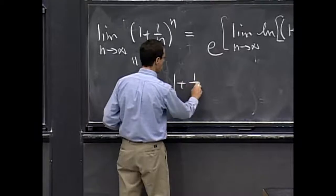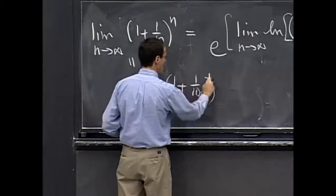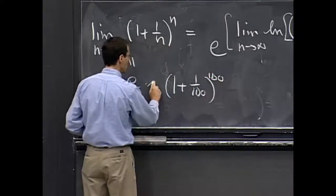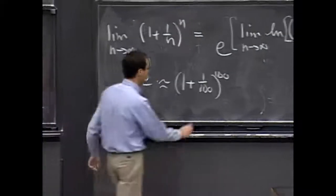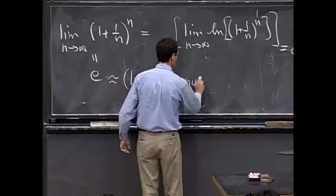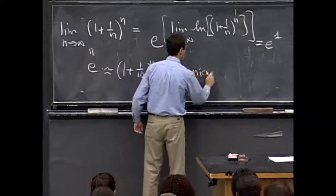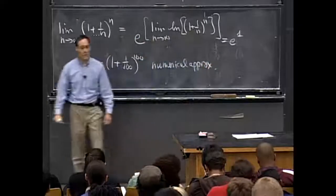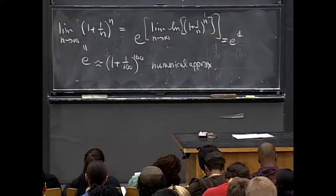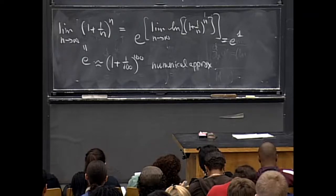1 plus 1 over 100 to the 100th power, that's going to be a very good, perfectly decent anyway, approximation to e. So this is a numerical approximation, which is all we can ever do with this kind of irrational number.